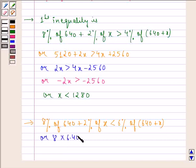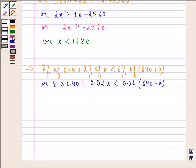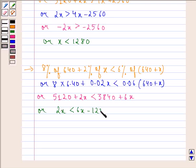Or 5120 plus 2x is strictly less than 3840 plus 6x, or 2x is strictly less than 6x minus 1280, or minus 4x is strictly less than minus 1280, or x is strictly greater than 320.